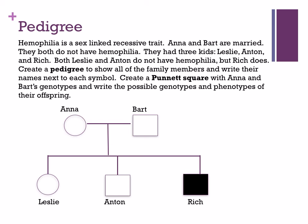Because hemophilia is sex-linked, I need X's and Y's. Since it's recessive, anyone with hemophilia gets a lowercase letter and anyone normal gets a capital letter. Rich's genotype is X-lowercase-h Y. Bart is unaffected, so he has X-capital-H Y. Anna is unaffected, so one of her X's is X-capital-H. Her other X must be X-lowercase-h because she passed that to Rich, and the Y came from Bart.